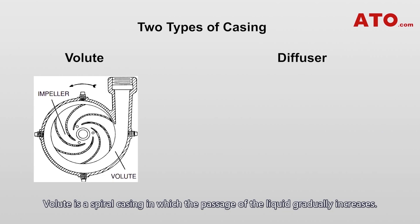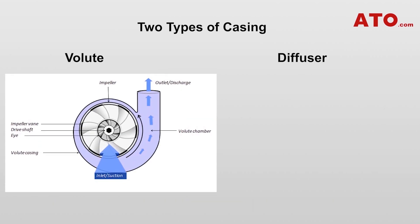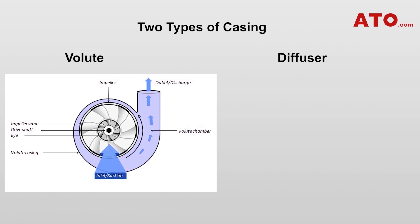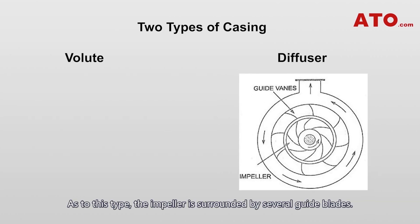The volute is a spiral casing in which the passage of the liquid gradually increases. This decreases the fluid velocity and increases the fluid pressure.